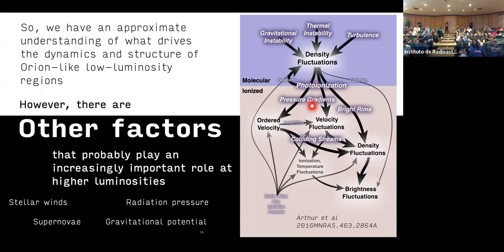Here we have all sorts of processes that can form density fluctuations, including gravitational instability and turbulence. For our purposes, it does not matter, because once you photoionize it, the thermal pressure dominates. In more luminous regions, stellar winds, jets, radiation pressure, supernovae and the gravitational potential can become important.